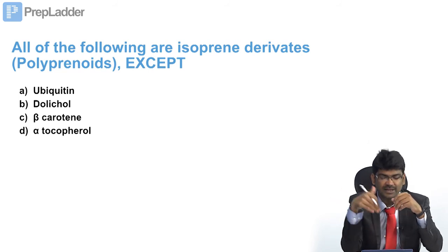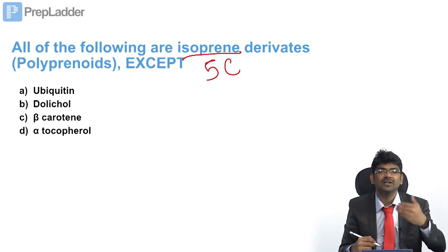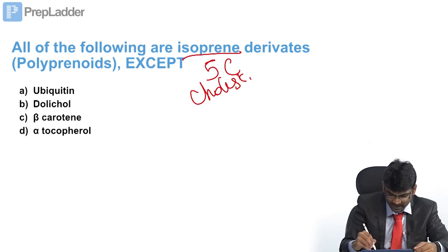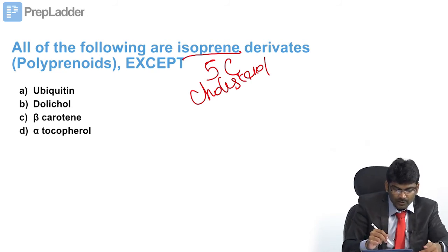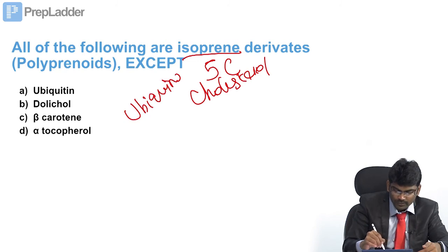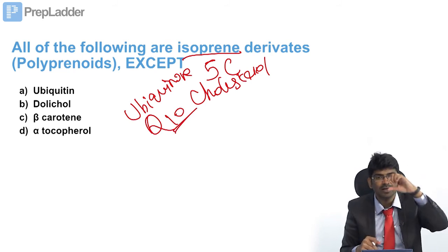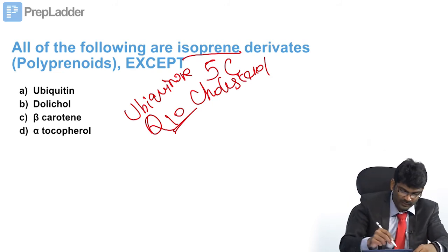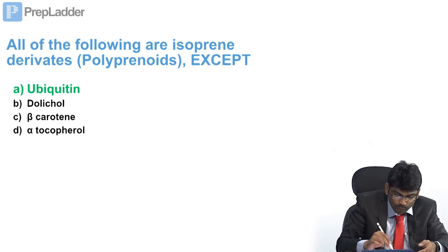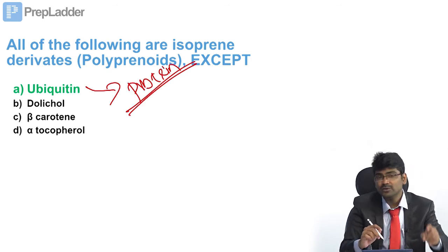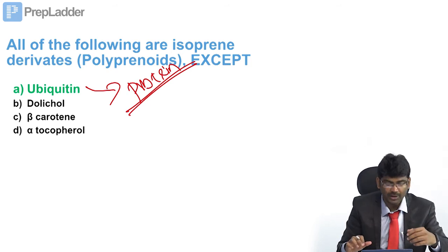All of the following are isoprene derivatives except? Isoprene is a 5-carbon compound. In our body we have many isoprene derivatives: cholesterol is an isoprene derivative, all fat-soluble vitamins are isoprene derivatives, and ubiquinone (Coenzyme Q or Q10) is named Q10 because it contains 10 isoprene units. Dolichol is also an isoprene derivative. The answer is ubiquitin — ubiquitin is a protein, not a lipid. Do not confuse ubiquitin with ubiquinone. Ubiquitin is involved in proteasomal-mediated destruction of proteins.